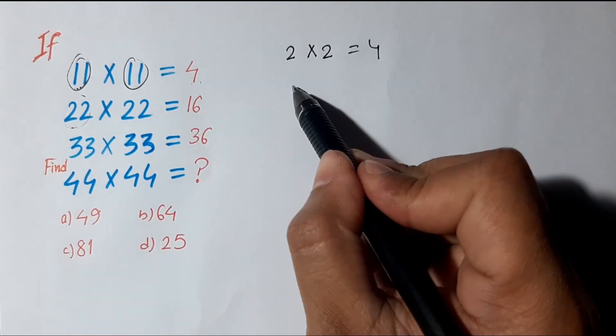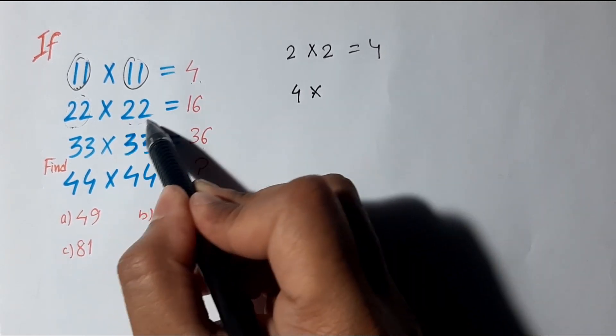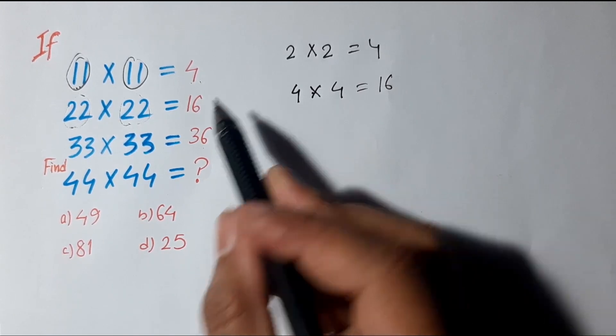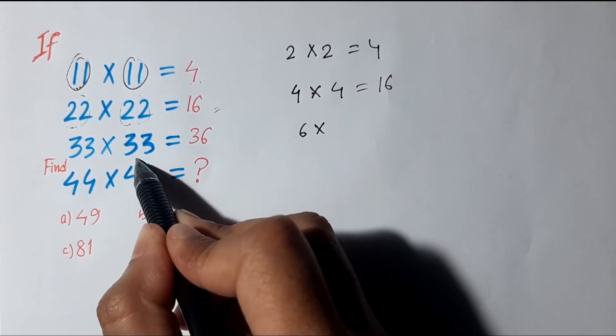For 22×22, we add 2+2 = 4, then 2+2 = 4 again, and 4×4 = 16. So that's the relation.